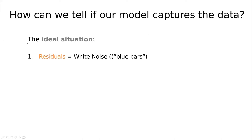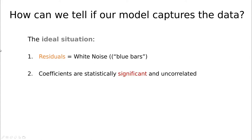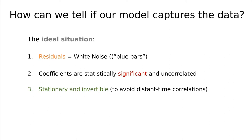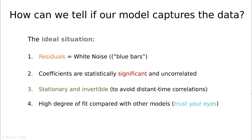In an ideal situation, the residuals should be pure noise — simply white noise, Gaussian distributed random noise. The coefficients should be statistically significant and uncorrelated, meaning all weights phi1, theta1, or whatever are completely relevant for the prediction. The process should be stationary and invertible: stationary because we assume the future will be like the past, and invertible so we're not introducing long-term correlations that might misleadingly connect something that happened 100 days ago with now. And fourth, when you look at the data and the fitting, both should more or less be the same.